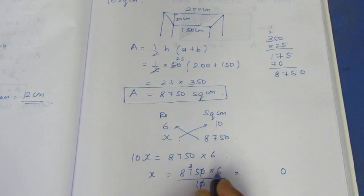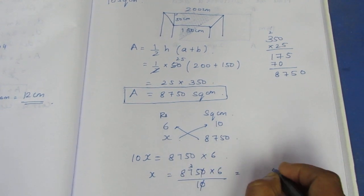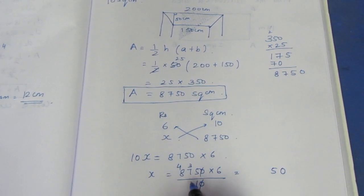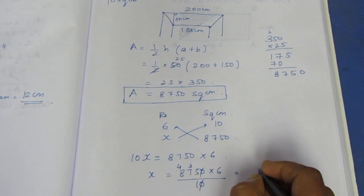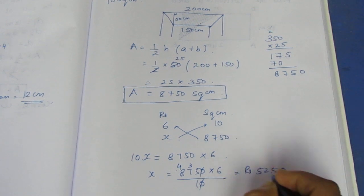6 times 7 is 42, plus 2 is 45. 6 times 8 is 48, plus 4 is 52. So rupees 5,250.